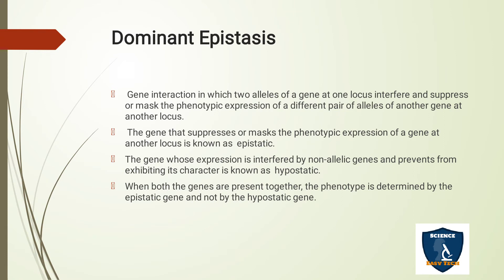Now we are going to see dominant epistasis, ratio 12:3:1. The definition of dominant epistasis: the gene interaction in which two alleles of a gene at one locus interfere and suppress or mask the phenotypic expression of a different pair of alleles of another gene at another locus. This means one dominant gene suppresses or masks the other gene.